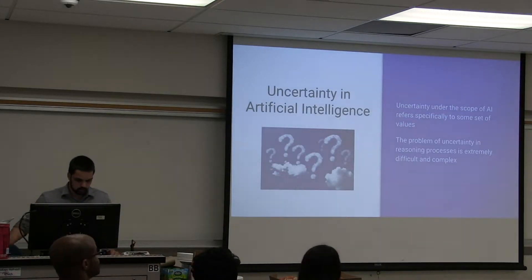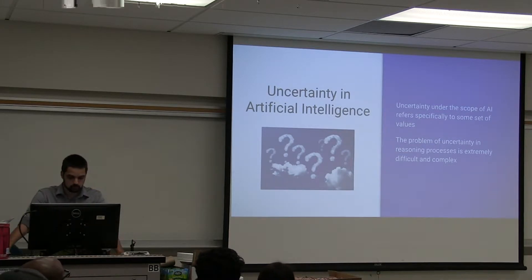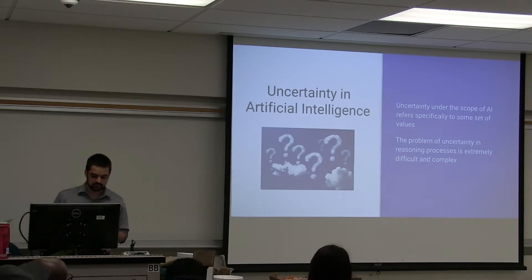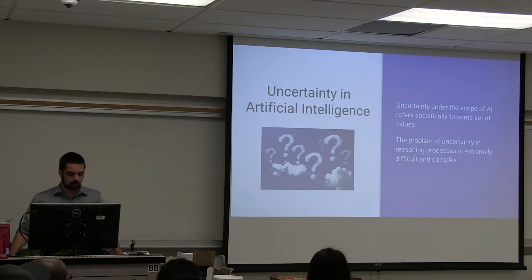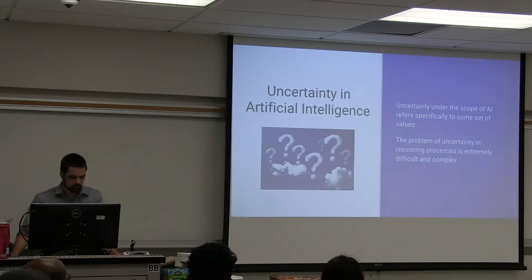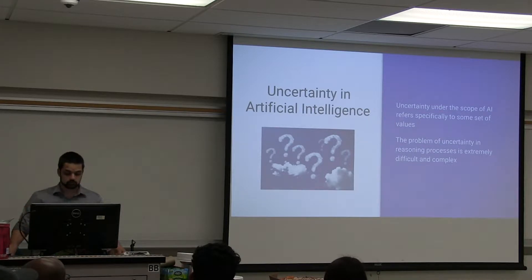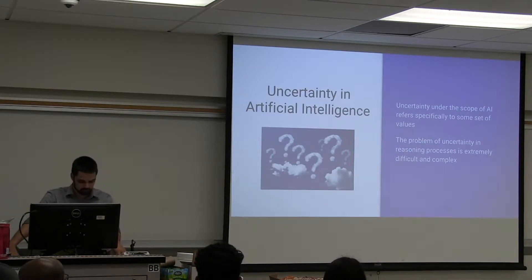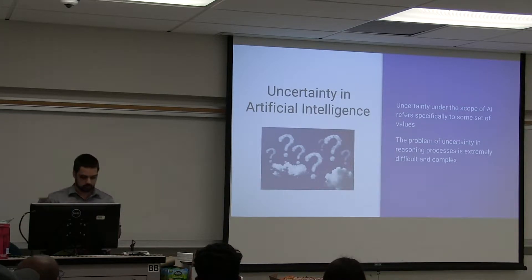Uncertainty under the scope of AI refers to some set of values. The problem of uncertainty in reasoning is extremely difficult and complex, and actually makes up a large subfield of AI. This is often because information made available to intelligent systems designers for model construction and reasoning is often incomplete or doesn't really provide enough information to produce accurate results. Uncertainty in one part of a model can actually propagate throughout the rest of the model and cause issues further down the line.